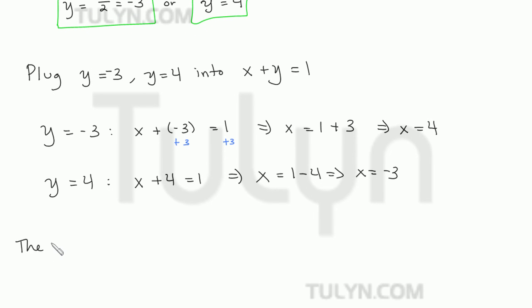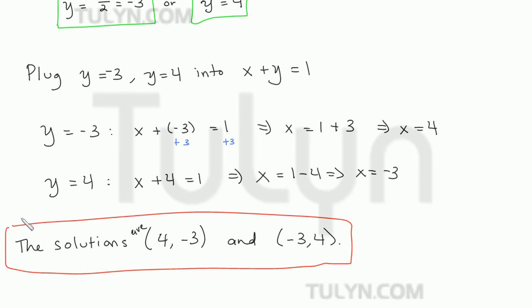So now we write our answer in terms of the ordered pair x comma y. So the solutions are, well, when y is equal to negative 3, x is equal to 4. So in x comma y, that's going to be 4 comma negative 3. And for the second set, when y is equal to positive 4, x is equal to negative 3. This is going to be negative 3 comma 4. So those are the two solutions for this nonlinear system of equations.